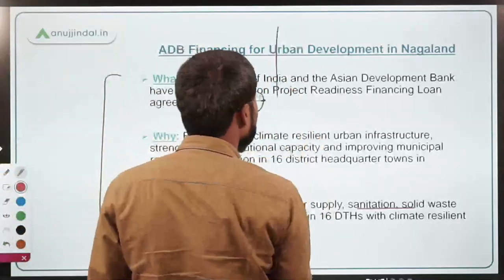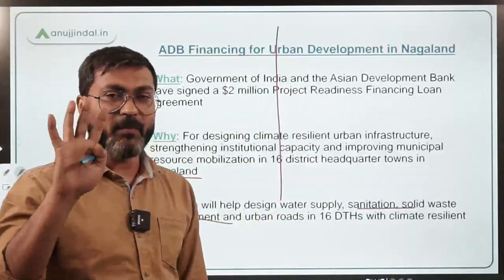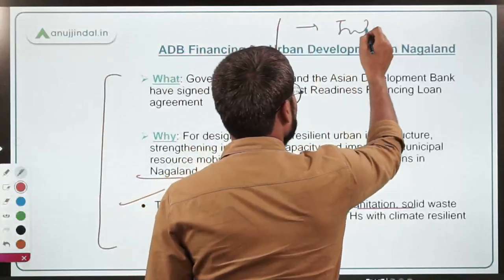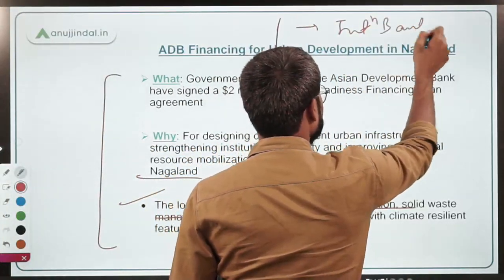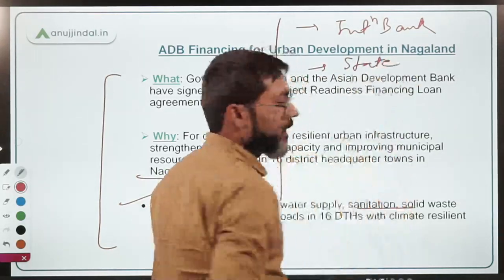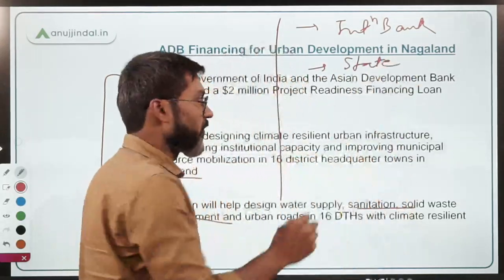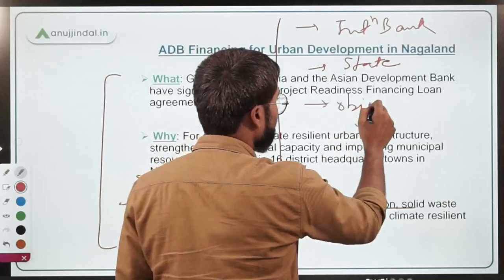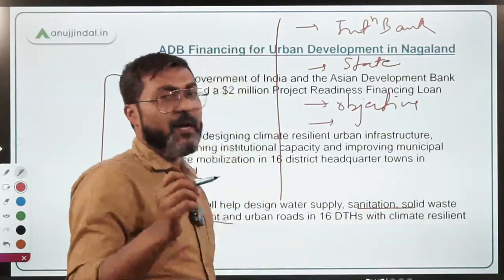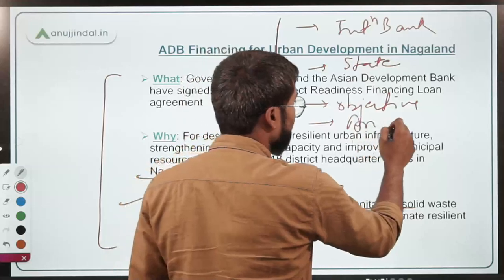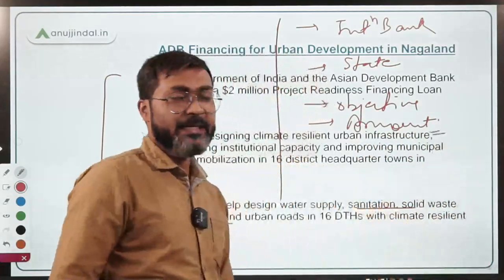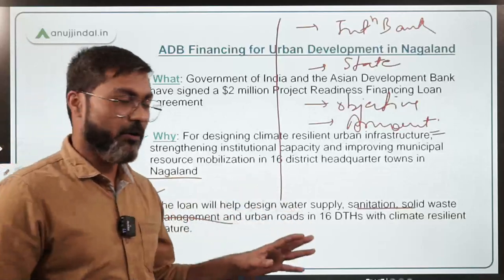In news related to loans, you just have to remember four things: number one, the international bank with which the loan has been signed; number two, the state for which the loan has been signed; number three, the objective of the loan; and number four, the amount of the loan. These four things are all you need to remember for any loan-related news.